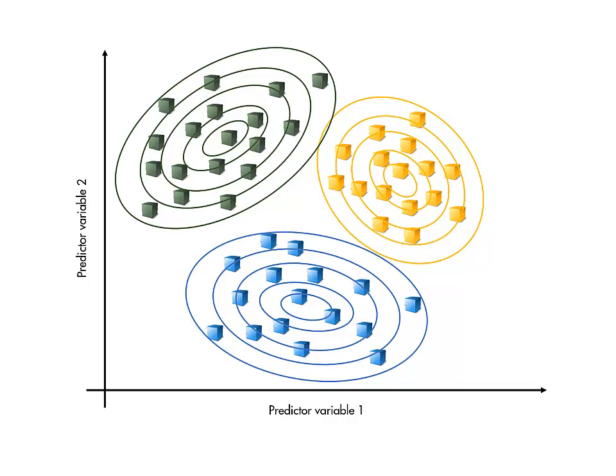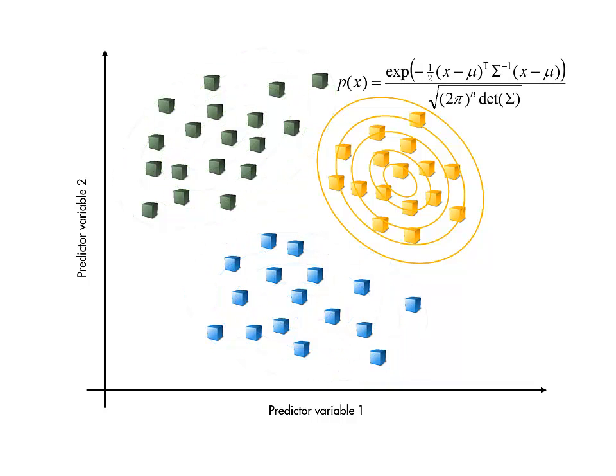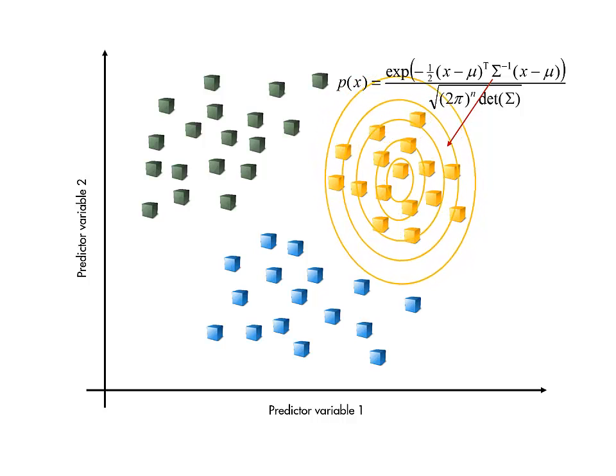Theoretically, we could fit an n-dimensional normal distribution to the observations in each class. This involves calculating the mean vector and covariance matrix for each class. These determine the center and shape of the distribution, respectively.